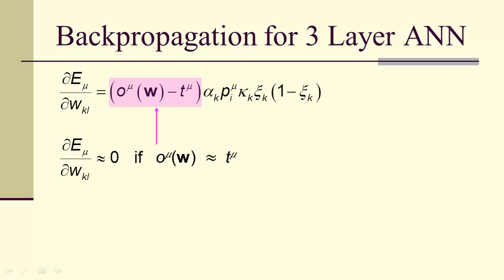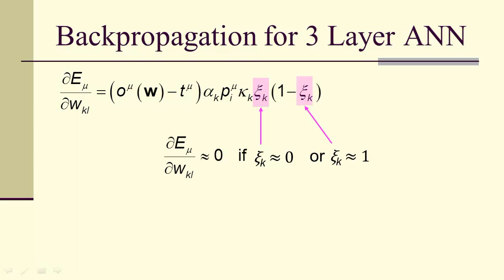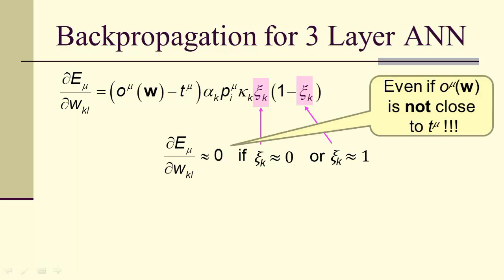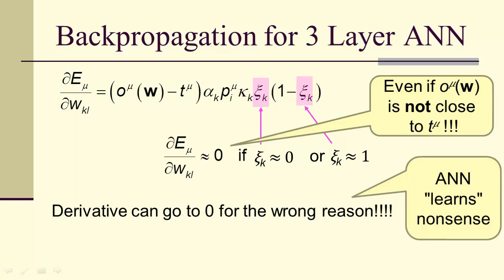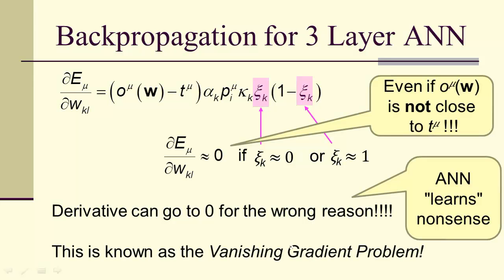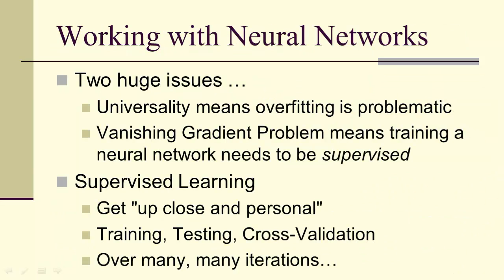So if we take a look at this, we notice that the derivative is approximately zero if the output is close to the target. That's exactly what we want. However, the derivative could be close to zero because the output from a hidden layer is close to zero or it's close to one. And this even if the output is not close to the target, we still have this property. So that means the derivative can go to zero for the wrong reason. An artificial neural network could learn nonsense in this case. And this is known as the vanishing gradient problem. So when you're working with neural networks, there are two huge issues. Universality means overfitting is a problem. The vanishing gradient means that a neural network needs to be supervised. Supervised learning means you get up close and personal training, testing, cross validation over many, many iterations.